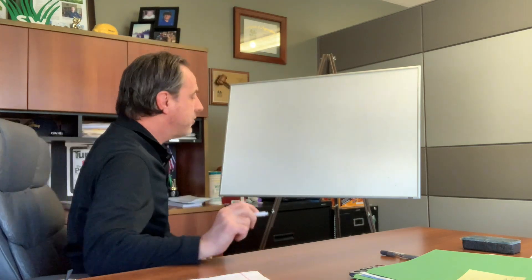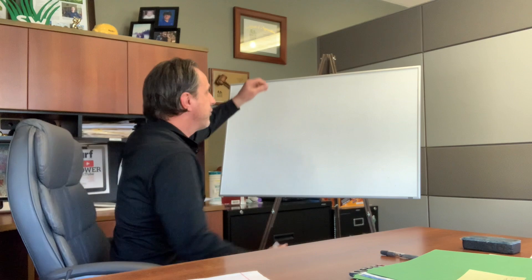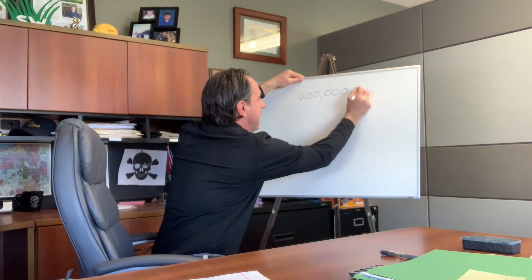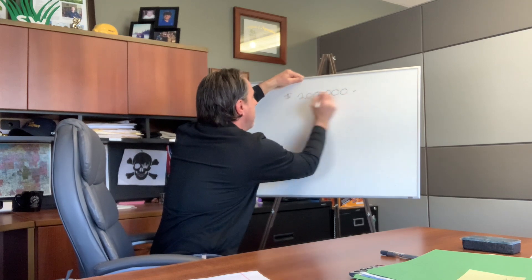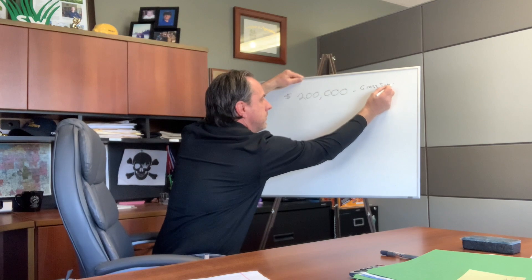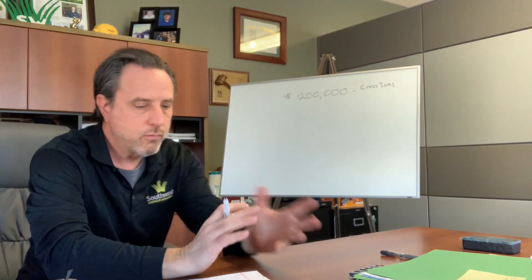I'm going to start with a basic company. We're going to look at a $200,000 gross business — $200,000 gross sales. The next number is overhead. Overhead could range on the low end 40%, on the high end 50%. Somewhere in those parameters is your overhead.